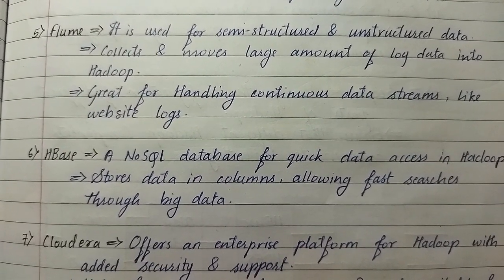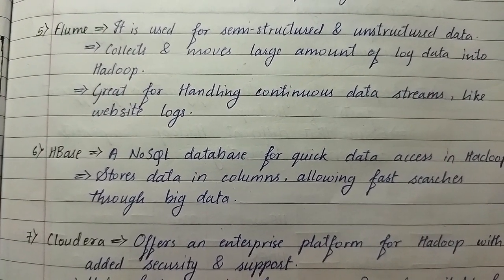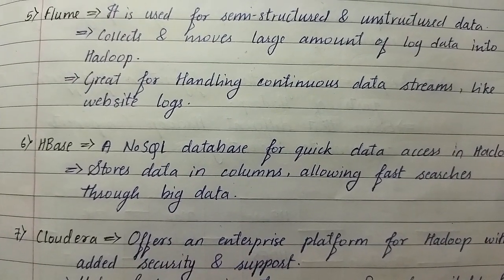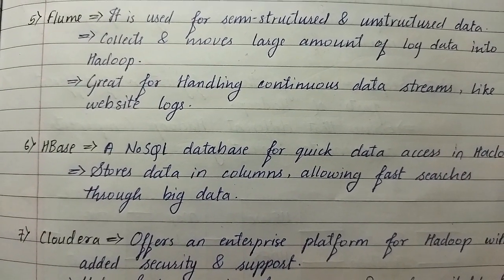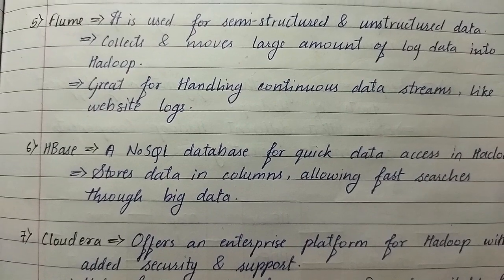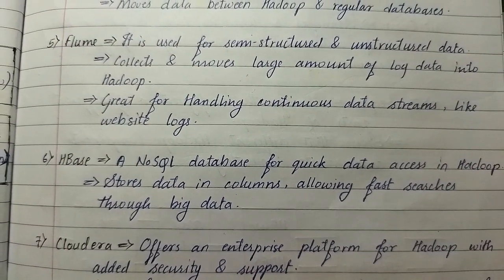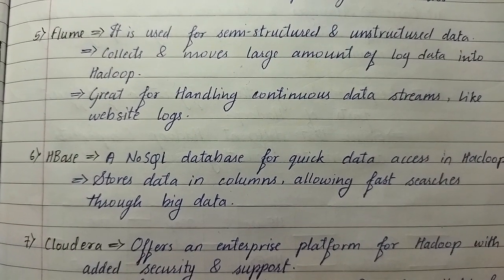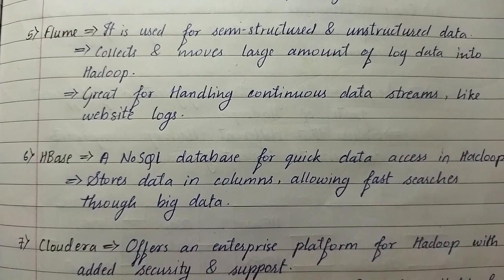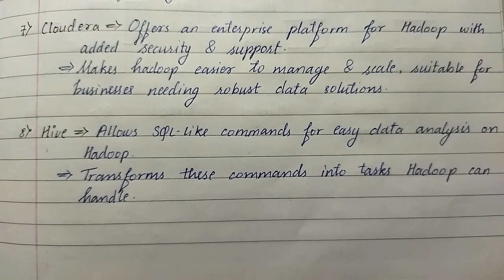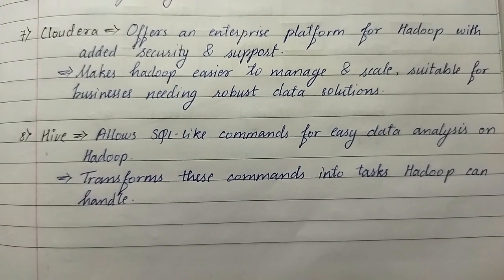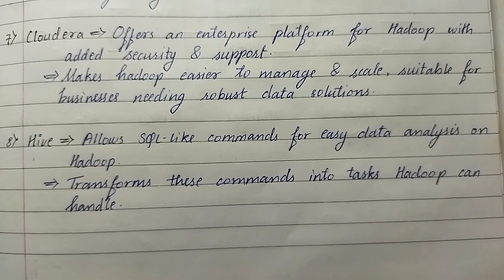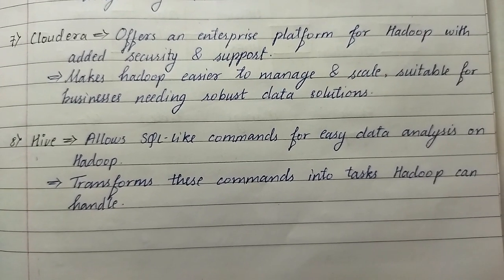Sixth is HBase, a NoSQL database for quick data access in Hadoop. It stores data in columns, allowing fast searches through big data. Seventh is Cloudera. It offers an enterprise platform for Hadoop with added security and support, and makes Hadoop easier to manage and scale, suitable for businesses needing robust data solutions.